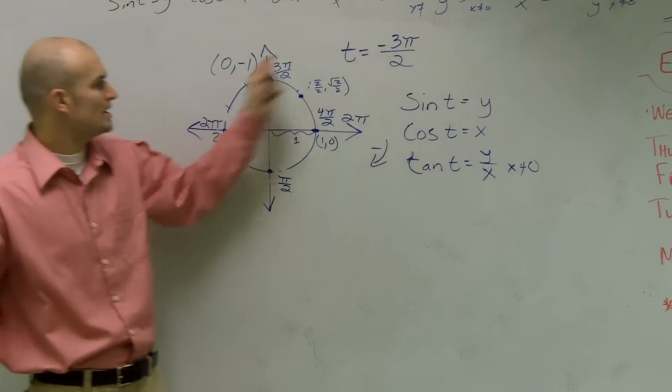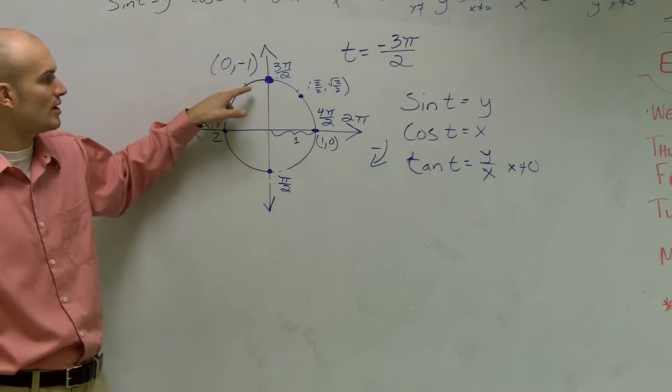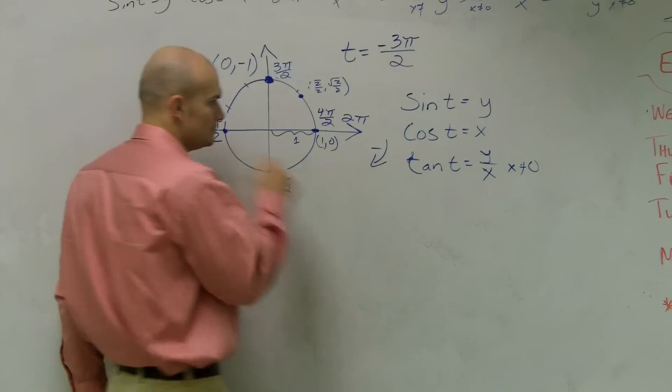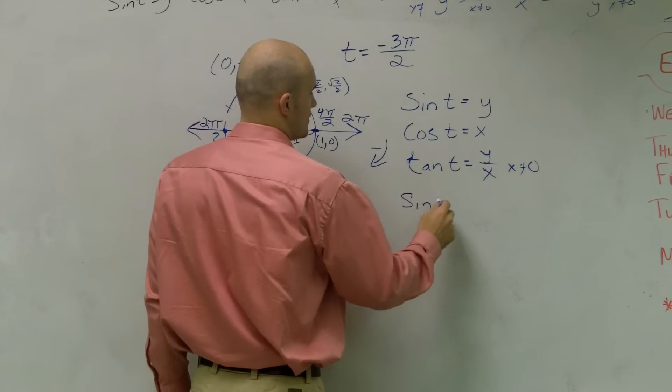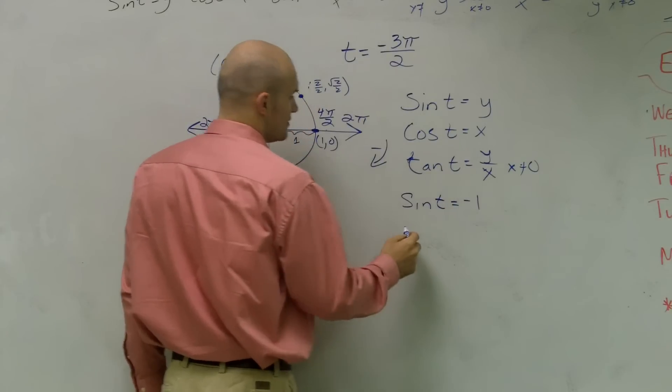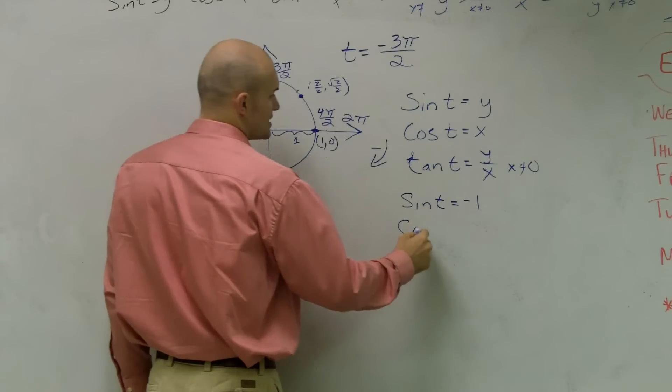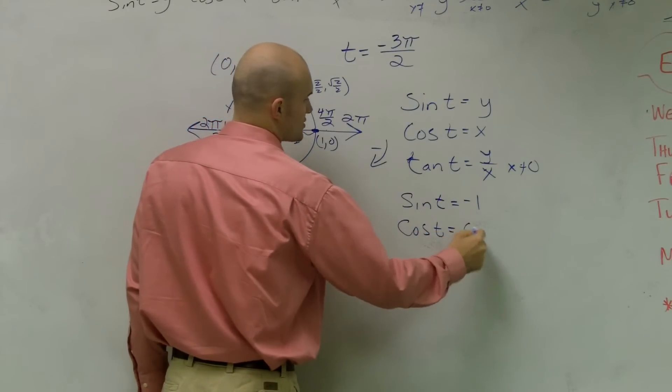So what is my y coordinate for my point, for sine? Negative 1. So you can say sine of t in this problem is negative 1.